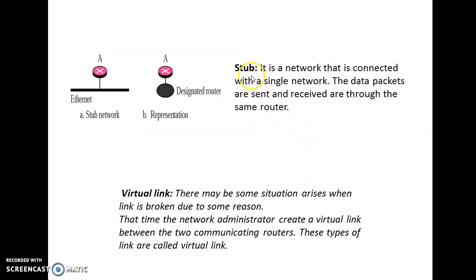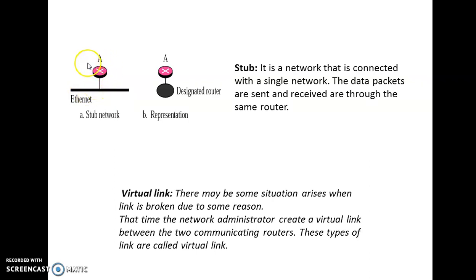The third link type is the stub link. It is a network connected to only a single router. Data packets sent and received all go through the same router, meaning both sending and receiving take place with the help of a single router. This is the actual representation of a stub link.